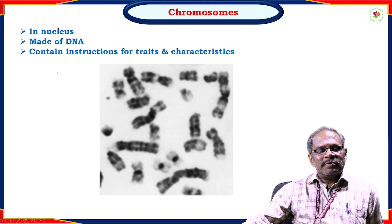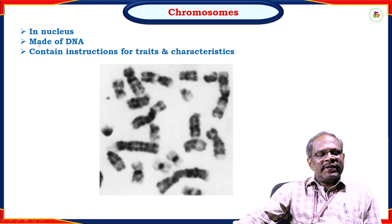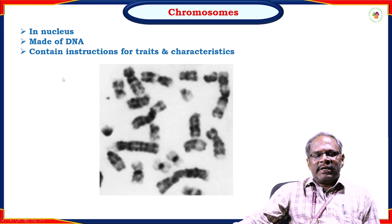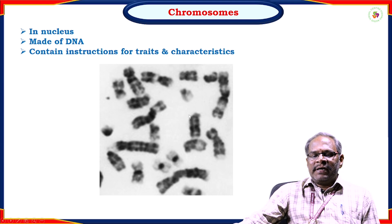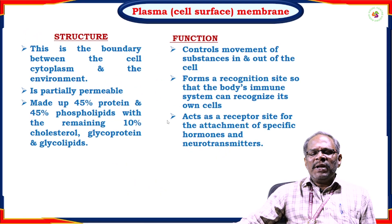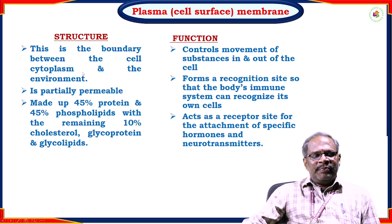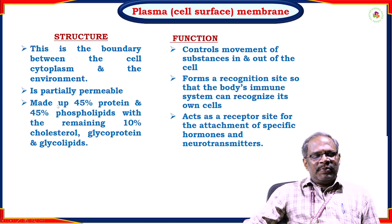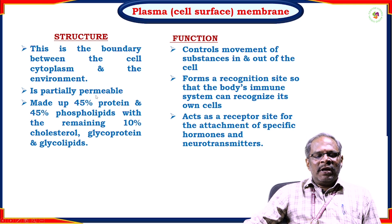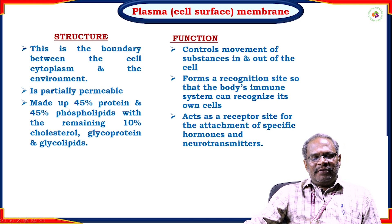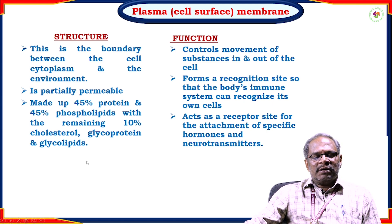The chromosomes are present in the nucleus as the main form of DNA and contain the instructions for traits and characteristics. The plasma membrane is the boundary between the cell cytoplasm and the environment. It is partially permeable, with some molecules allowed through this membrane.